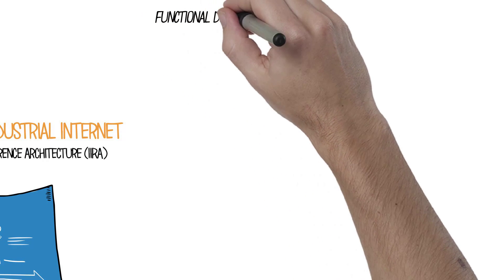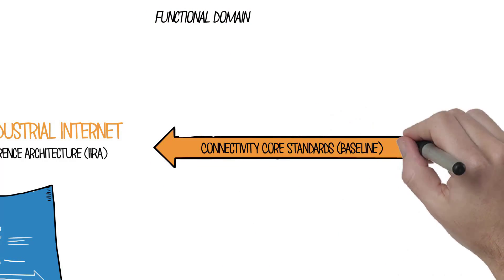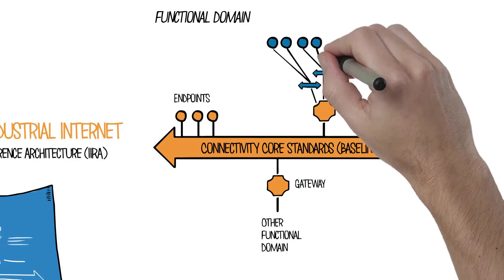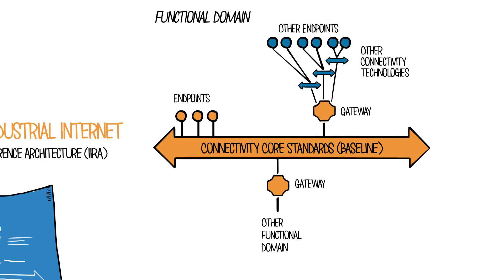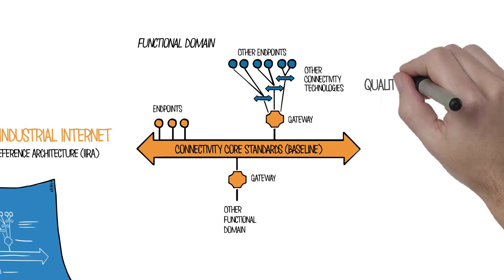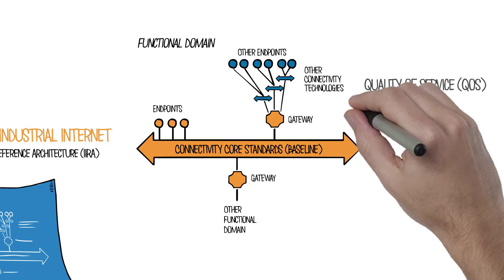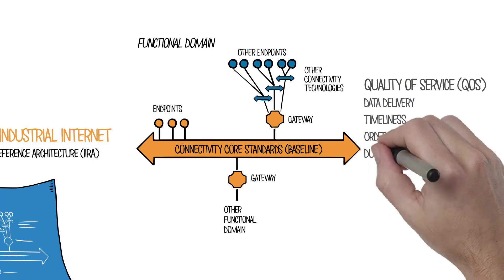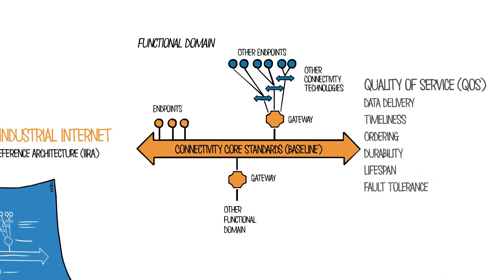The key component of the IIRA is connectivity. It includes a core data bus and gateways to other standards. The central data bus with gateways connects smart machines together into large-scale intelligent systems. This data-centric connectivity architecture relies on quality of service to support features such as data delivery, timeliness, ordering, durability, lifespan, and fault tolerance.